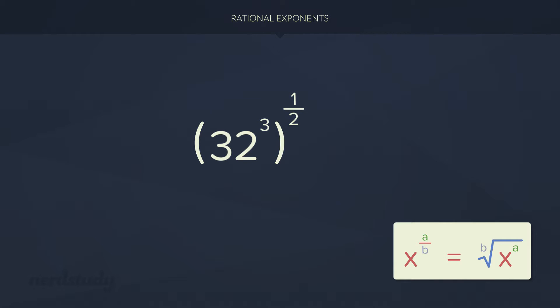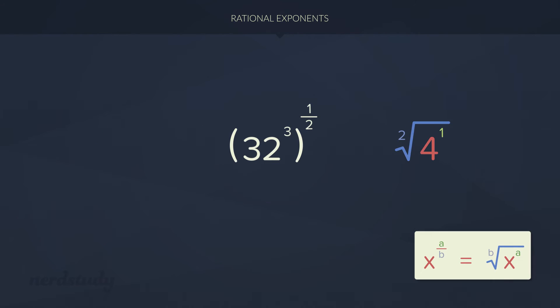And now, of course, you see the similarities between this example and our very first example where we did 4 to the exponent 1 over 2. Remember that when we raised 4 to the exponent of 1 over 2, it was the same thing as simply taking the square root of 4. Similarly, if we're raising 32 to the exponent 3 to the exponent of 1 over 2, then that would be the same as taking the square root of this entire power right here.